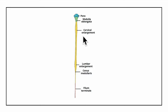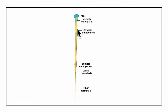Now let's look at the enlargements of the spinal cord. The muscles of our limbs need to be supplied by the neurons of the spinal cord, so neurons at appropriate levels form enlargements to supply this increased musculature. There are two main enlargements: the cervical enlargement, for the supply of upper limb muscles, extending from C4 to T1 spinal segments; and the lumbar enlargement, for the supply of lower limb muscles, extending from L2 to S3 spinal segments.